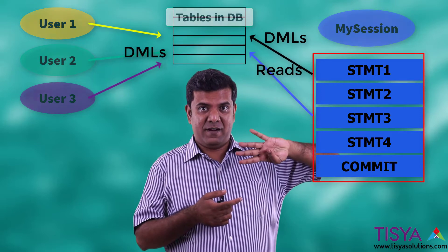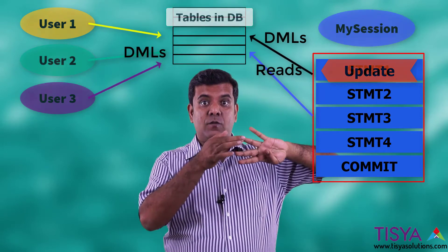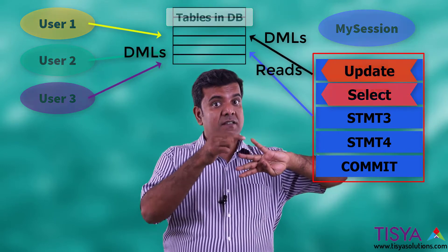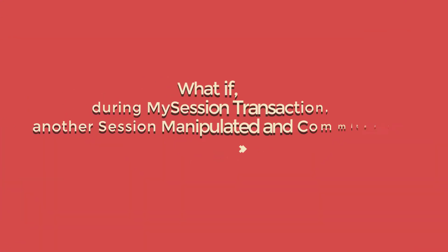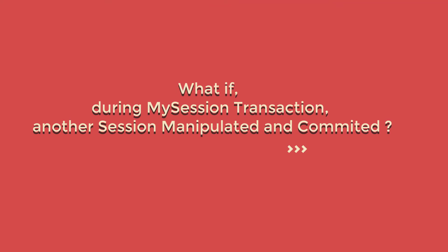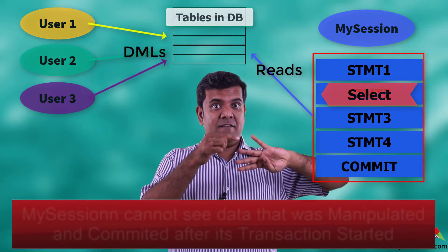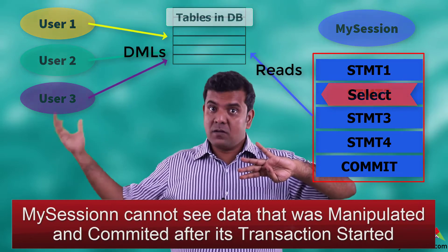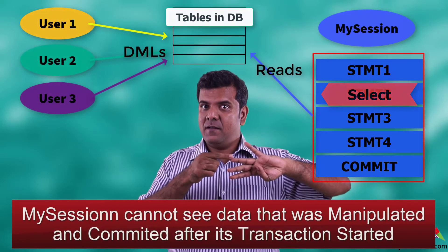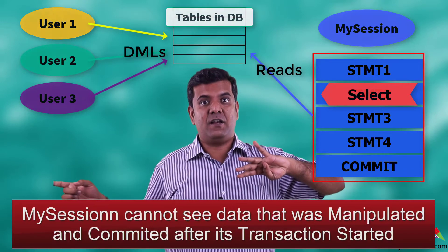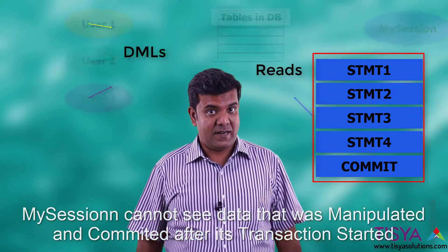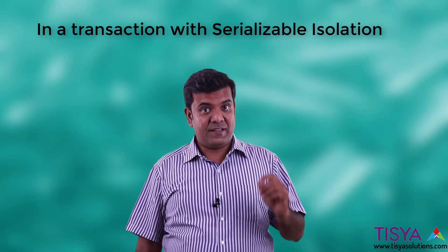At the same time, my transaction will be able to see changes made by my own transaction. So if I have four statements in my transaction, I do an update and then I do a select, and if that select reads the same row that was updated, I will see the new value. But if the select is reading data manipulated and committed by another user before the select fired, it will not fetch the updated value.